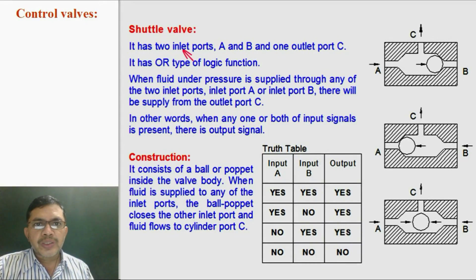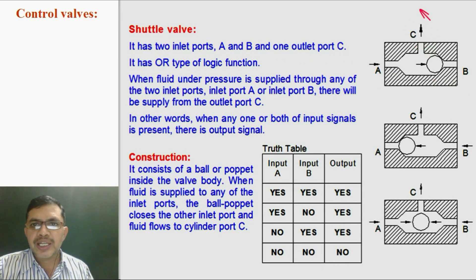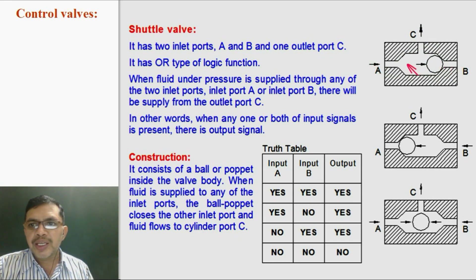Shuttle valve — it has two inlet ports, inlet port A and inlet port B, and one outlet port, i.e. C is the outlet port. The C port is connected to a single acting cylinder. When there is supply of fluid to port A, then the valve will shift towards the right and it will close port B.